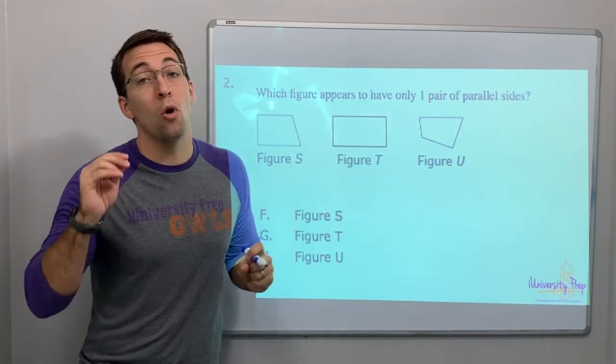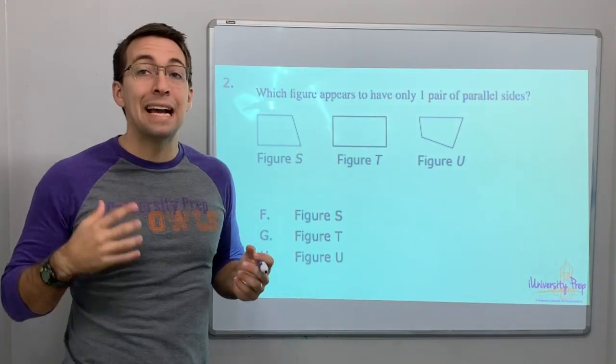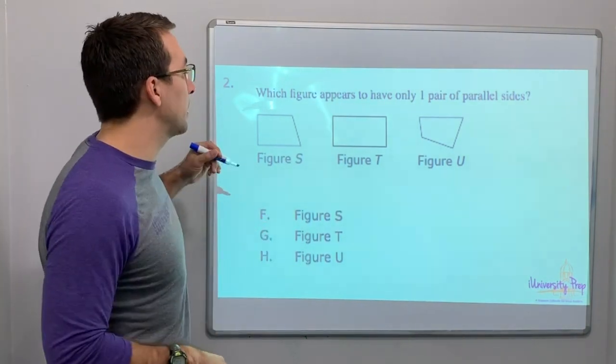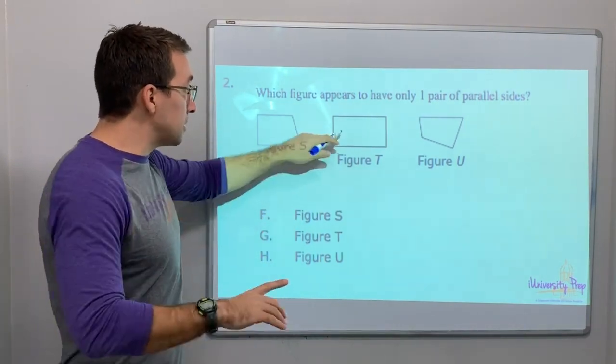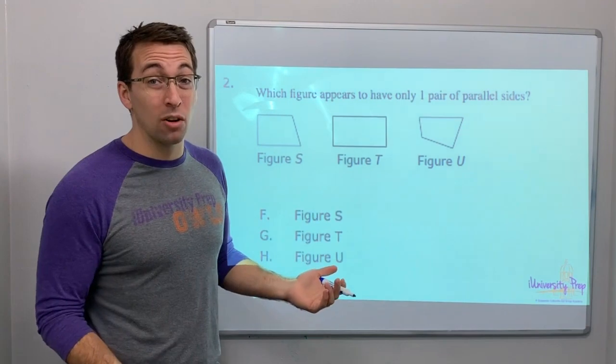Which figure appears to have only one pair of parallel sides? Figure T - that looks like a rectangle. Let's draw that. Those are parallel, and these are parallel.